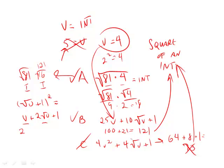This form is very similar to B. Look, 25V plus 10 times the square root of V plus number 1. So therefore, this is actually equal to 5 times the square root of V plus 1 squared. If the square root of V is an integer, integer times 5 plus 1 will give you an integer. Hence, that works.